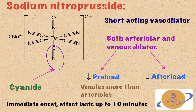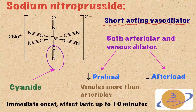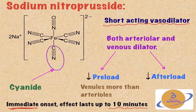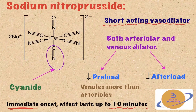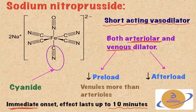Sodium nitroprusside is a short-acting vasodilator. It has an immediate onset and its effect can last up to 10 minutes. So if you want to give it, you should give it in a continuous intravenous infusion. It acts both on the arterioles and the venules, causing both arteriolar and venular dilatation.